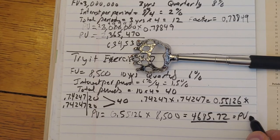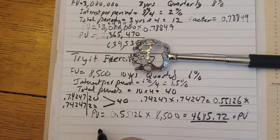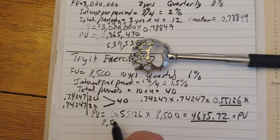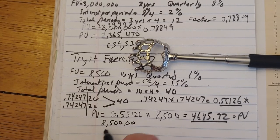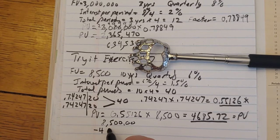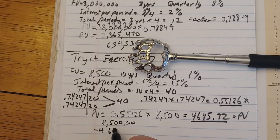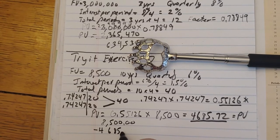All right. So if we want to know the interest that was earned, $8,500 minus the present value, $4,685.72.